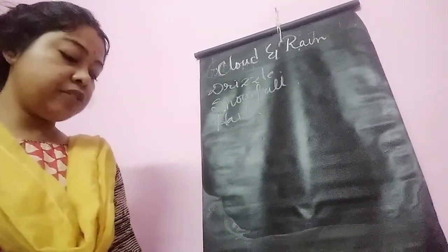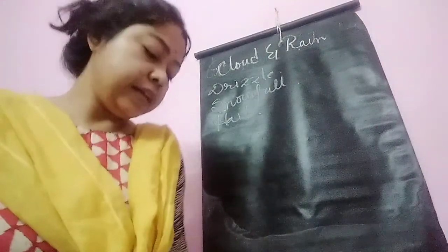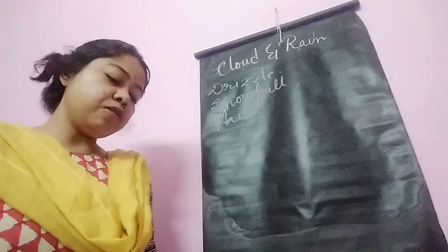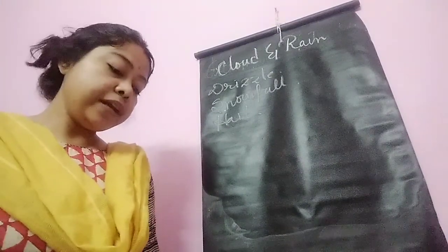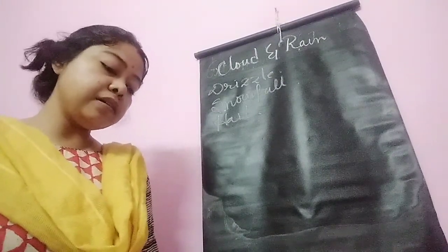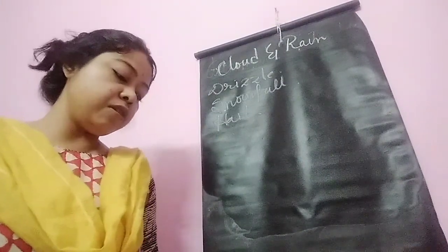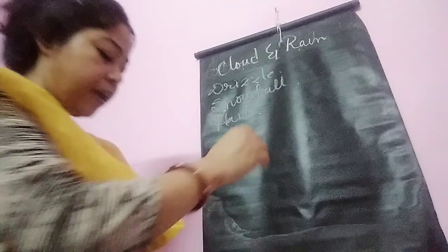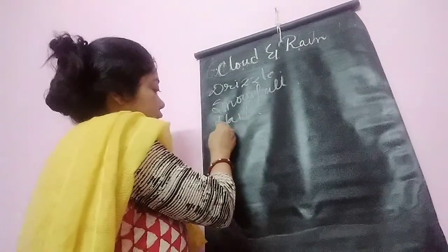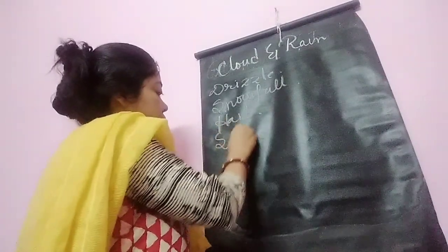Next one is sleet. Sleet is another form of precipitation. When ice particles or hail fall on the ground and drop, it is called sleet.